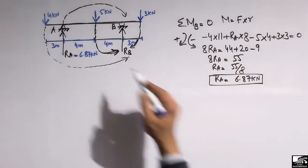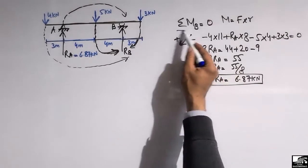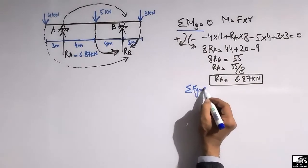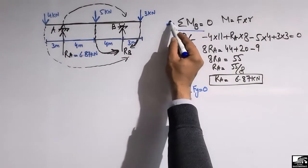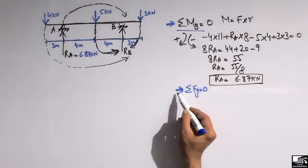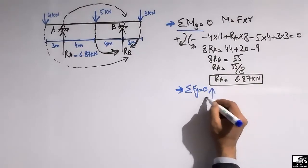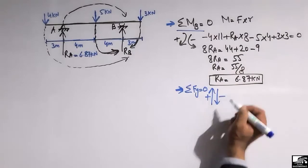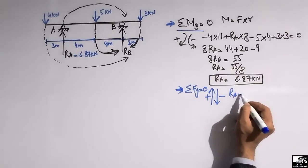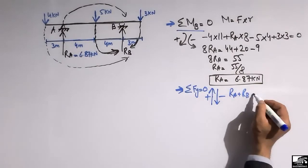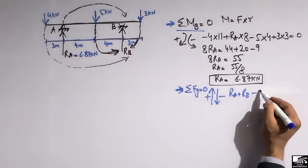To find RB, we use the equilibrium equation: summation of vertical forces equals zero. Upward forces are taken as positive and downward forces are taken as negative. The upward forces are RA and RB (positive), and the downward forces are 4, 5, and 3 kN (negative).